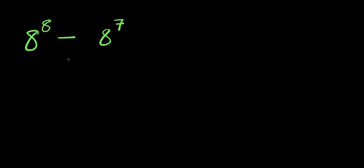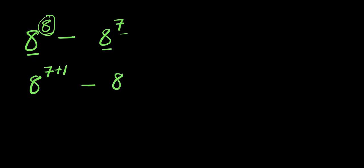How to evaluate this without a calculator: this is a^8 minus a^7. I'm going to express 8 as the summation of 7 and 1, so we have a^(7+1) minus a^7. Now if you have a^(x+y), this equals a^x times a^y.